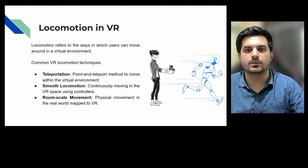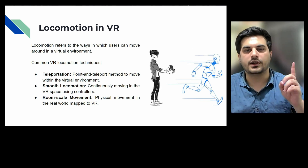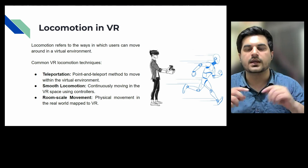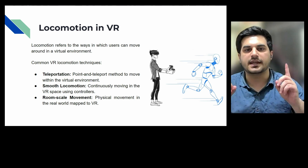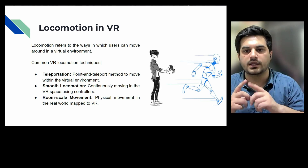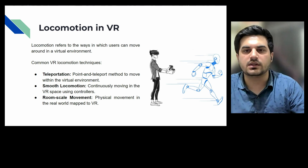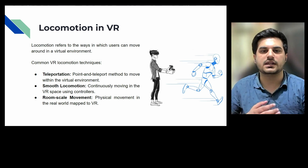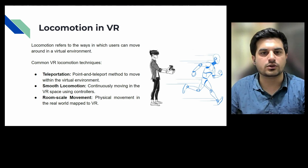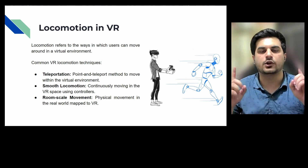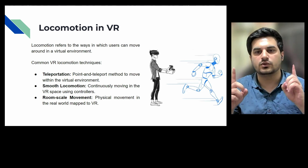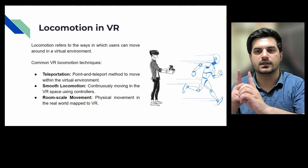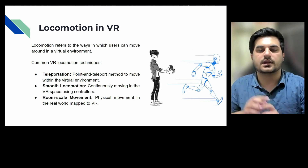Let's discuss what teleportation is. Suppose there are point A and point B and you want to move between them. Using teleportation, we can directly move from point A to point B. It is a point-and-teleport method and can be easily implemented. Next is smooth locomotion — in this, if we are moving from point A to point B, we are moving smoothly and continuously.